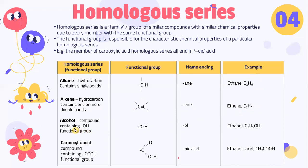Alcohol is a compound that contains OH as the functional group. The name ending is -ol. The example given is ethanol, with the formula C2H5OH.